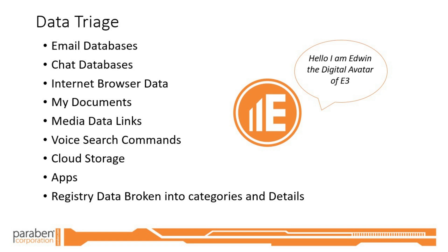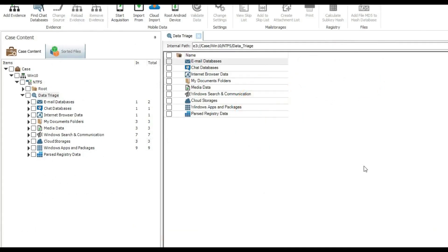Hello and welcome. I am Edwin, the digital avatar for Paraben's Electronic Evidence Examiner platform. I will be your guide as we explore the powerful and intuitive functions of e3. In this video we will explore the functions of data triage. This function allows you to investigate system or physical drive evidence much easier and faster. Electronic Evidence Examiner auto-detects the important data in the drive registry and displays it in the subnodes of the data triage node.